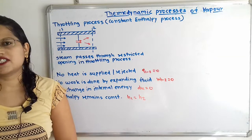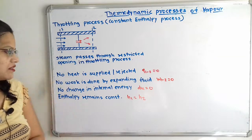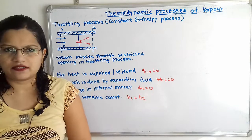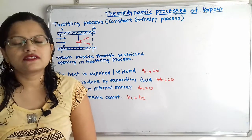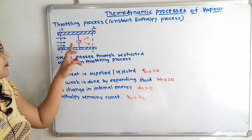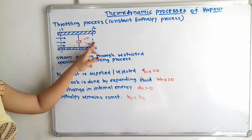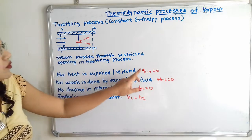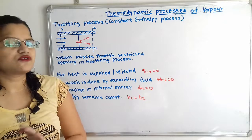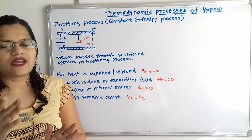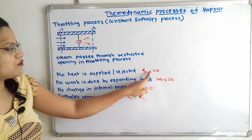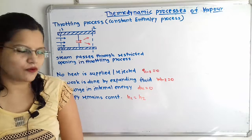What are the characteristics for this throttling process? First, there is no heat supplied or rejected. Whenever this throttling process is taking place, we can say that heat transfer during the process 1 to 2, that is Q1-2, is equal to 0. Whenever there is a question to calculate the heat transfer during the throttling process, we have to write it as 0.